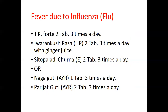For Ayurvedic prescriptions for influenza: Tribhuvanakirati 4 (TK4) — 2 tablets three times a day. Jwarankusha Ras of Hariparashram Aushadhalaya, Pune — 2 tablets three times a day with ginger juice. Sitopaladi Churna of ICN Company (churna means powder; tablets are also available) — 2 tablets three times a day. Alternatively, you can use Nagaguti of Ayurvedashala, Pune — 1 tablet three times a day — and Parijatak Guti — 2 tablets three times a day.